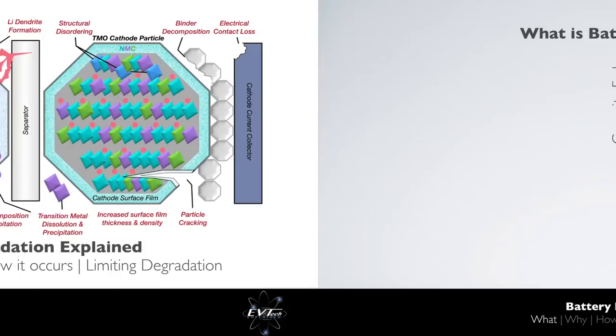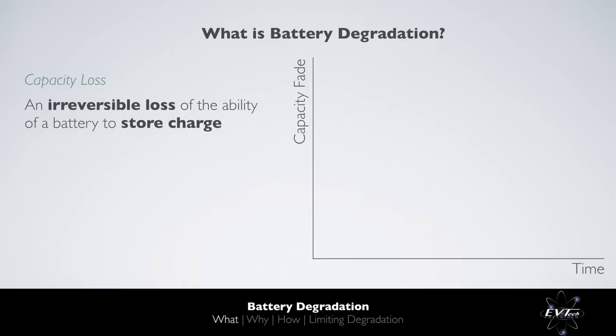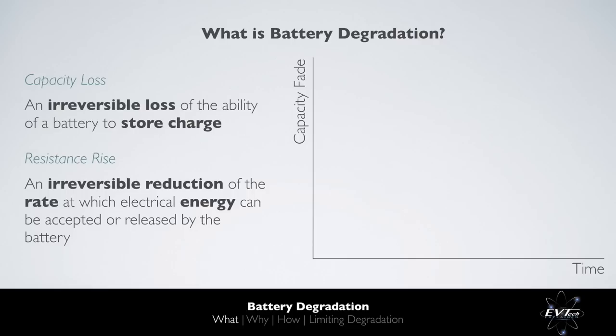Battery degradation is an irreversible loss of the ability of a battery to store charge, or a reduction of the rate at which electrical energy can be accepted or released from the battery. If we look at how battery capacity typically fades over time, we see three distinct phases.